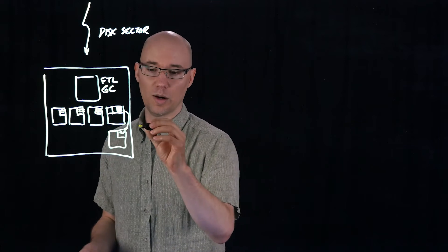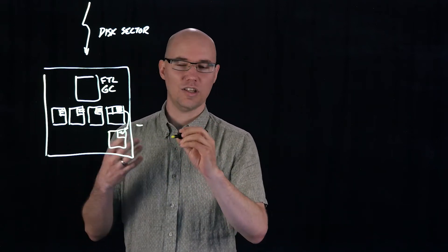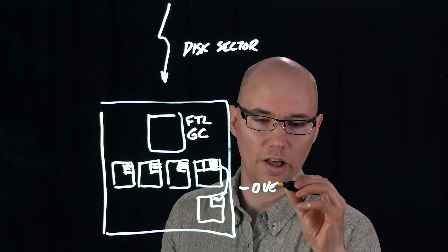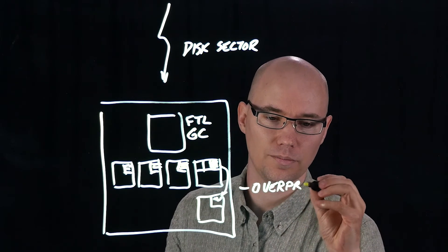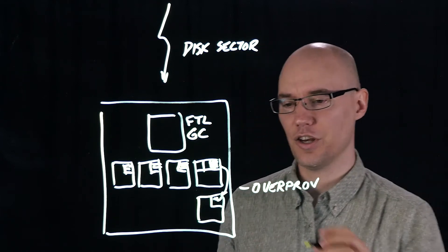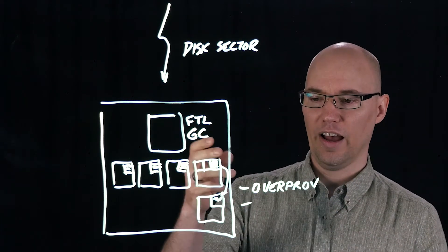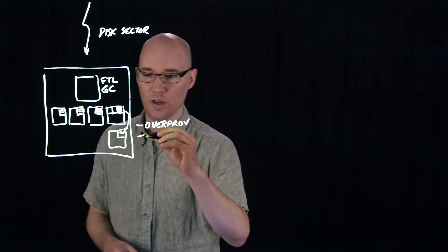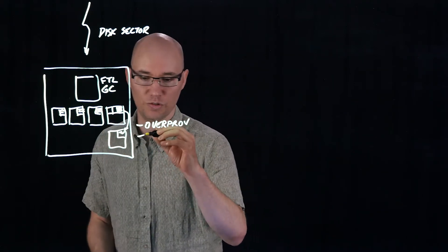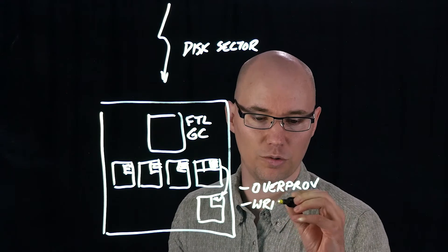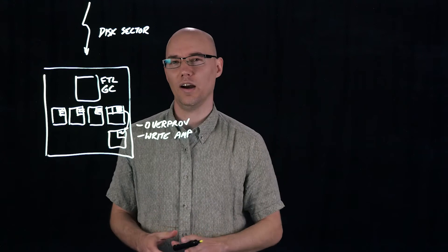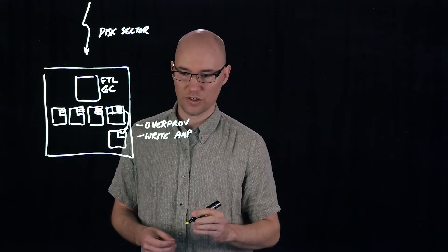First of all, for the garbage collector to be efficient, we need to have a significant amount of extra flash for the GC to work in, and we call this over-provisioning. In addition, we also have an increase in the number of flash program erase cycles that are used because each time GC has to move data, that's adding to the total number of writes. We call this write amplification, and that leads to premature wear and shortened lifespan of the SSD.